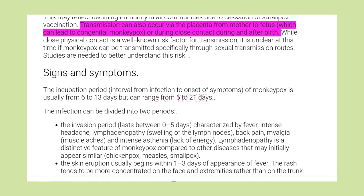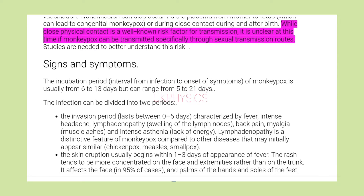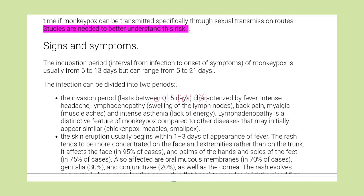This may reflect declining immunity in all communities due to cessation of smallpox vaccination. Transmission can also occur via the placenta from mother to fetus, which can lead to congenital monkeypox, or during close contact during and after birth. While close physical contact is a well-known risk factor for transmission, it is unclear at this time if monkeypox can be transmitted specifically through sexual transmission routes. Studies are needed to better understand this risk.